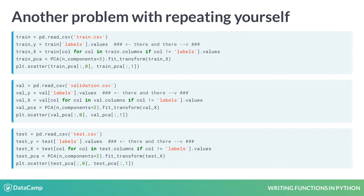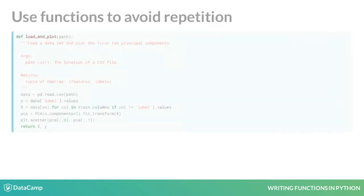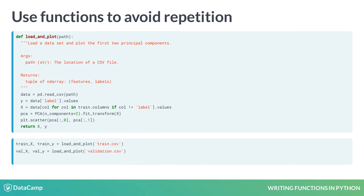Repeated code like this is a good sign that you should write a function. So let's do that. Wrapping the repeated logic in a function and then calling that function several times makes it much easier to avoid the kind of errors introduced by copying and pasting. And if you ever need to change the column label back to labels, or you want to swap out PCA for some other dimensionality reduction technique, you only have to do it in one or two places.